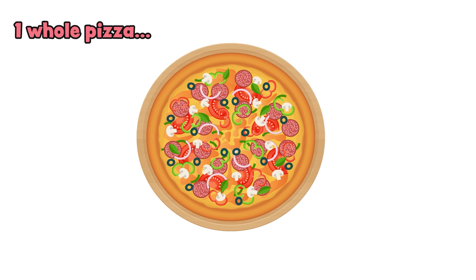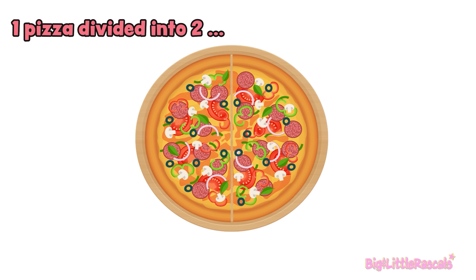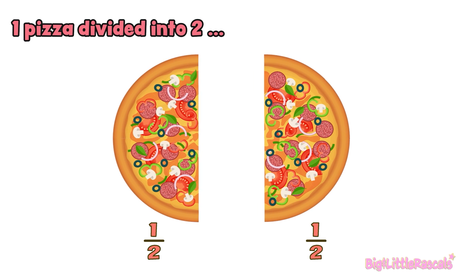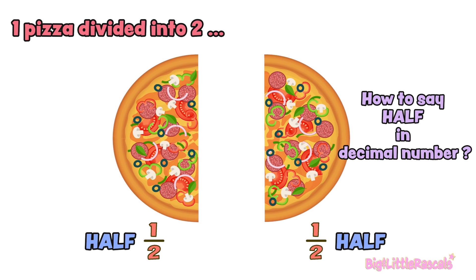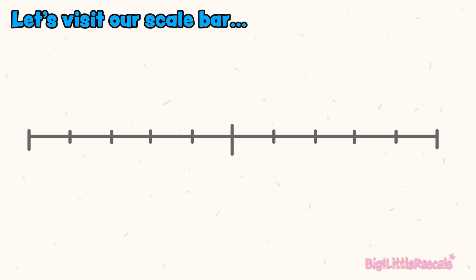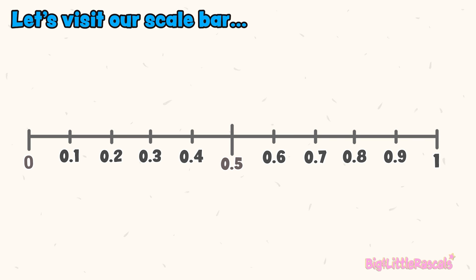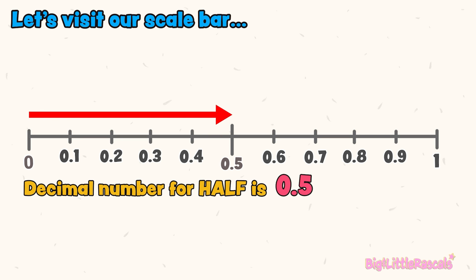Let's see this pizza — one whole pizza. One pizza divided into two gives us half: one divided by two. But how do you say this half in decimal number? Let's visit our scale bar and find half. So in decimal number, half is 0.5.